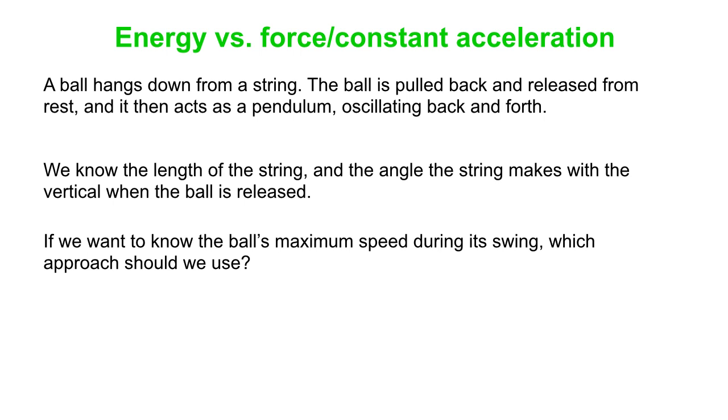We want to know the ball's maximum speed during a swing, which of course is when the ball goes through its equilibrium position when the string is vertical. So what approach should we use? Energy, perfect for this. Mgh is one half mv squared. Calculate the v.